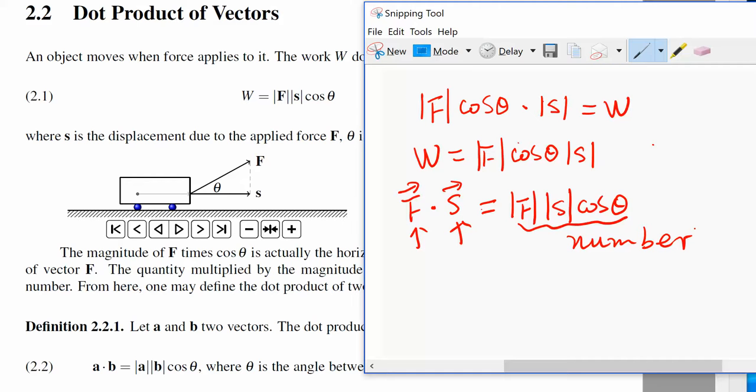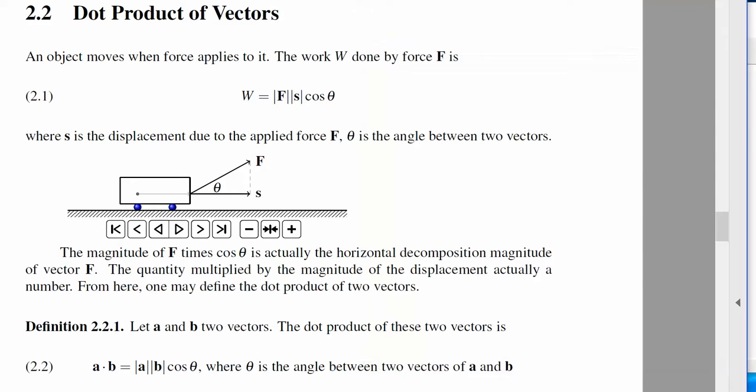So in general, the definition will be like this. If vector A and B are two vectors, then the dot product of these two vectors will be A dot B equals the magnitude of A times magnitude of B times cosine theta, where theta is the angle between two vectors.